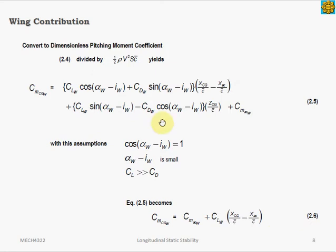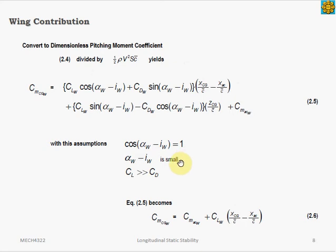Once we have the pitching moment equation, we redefine it as the pitching moment coefficient cm, which is a dimensionless value and easier to work with. We make the moment equation dimensionless by dividing by one-half rho v-squared times S times c-bar, where c-bar is the mean aerodynamic chord of the wing. After applying a small angle assumption and assuming the lift is much greater than the drag, we get a simplified equation for the pitching moment coefficient.